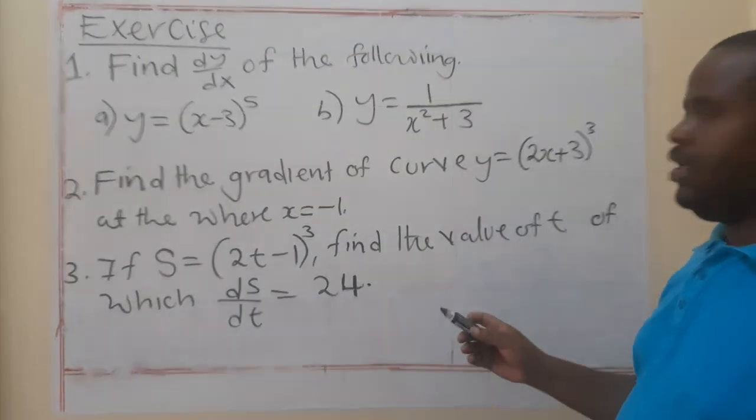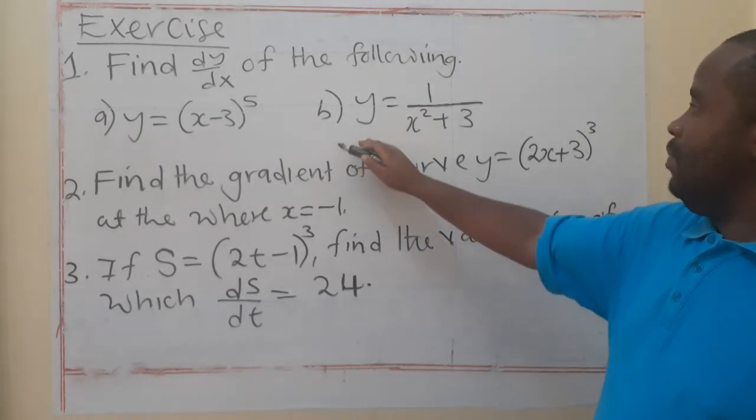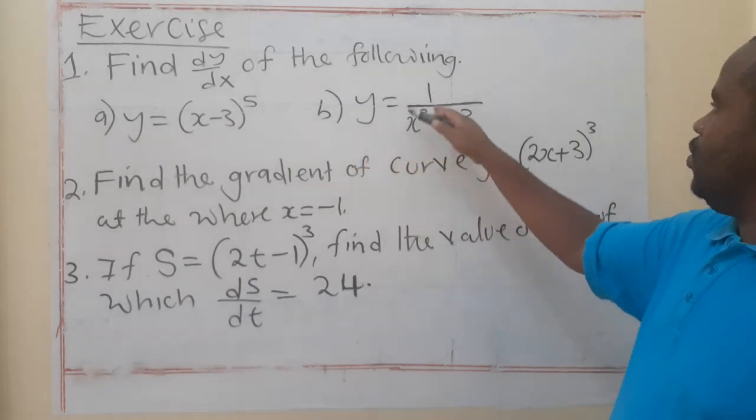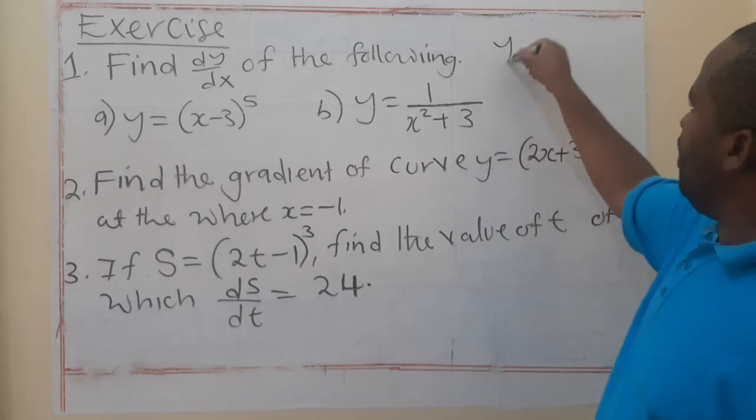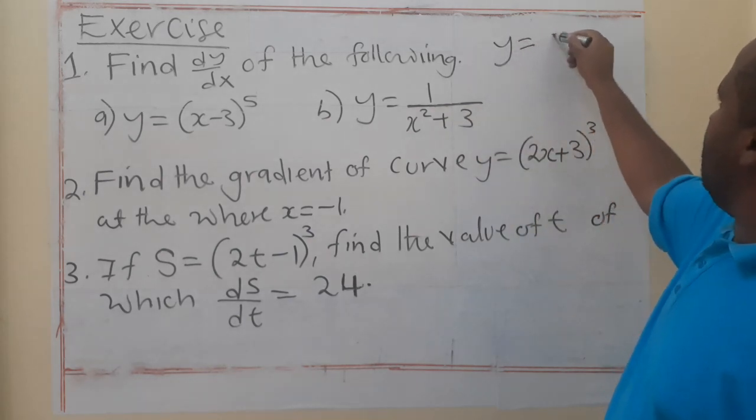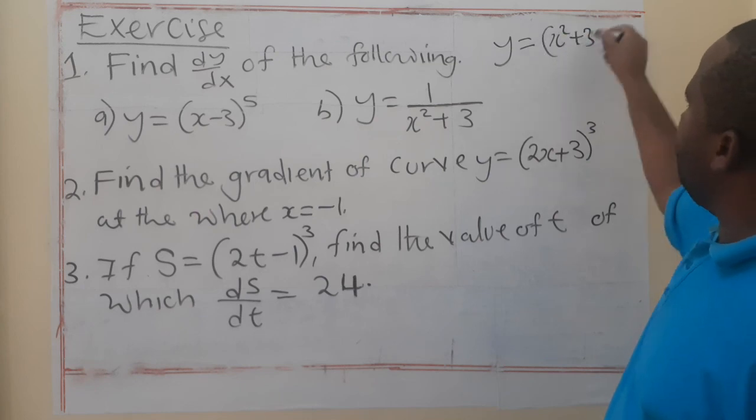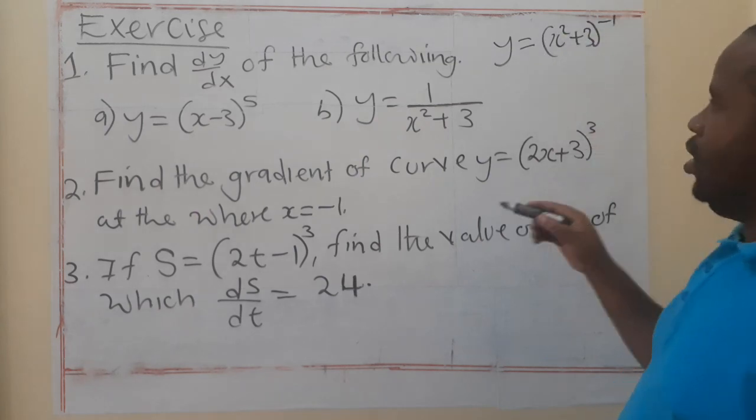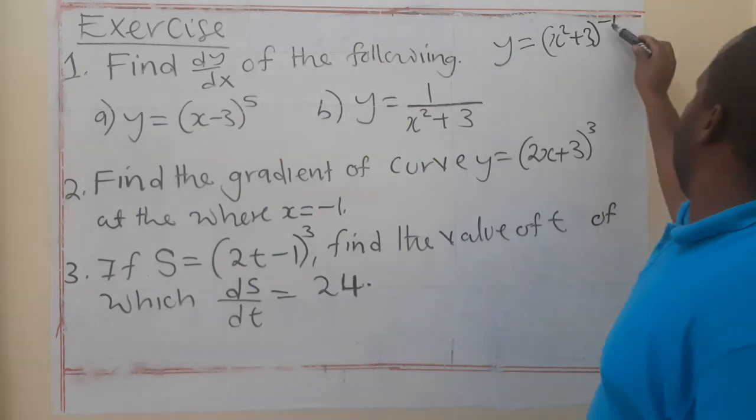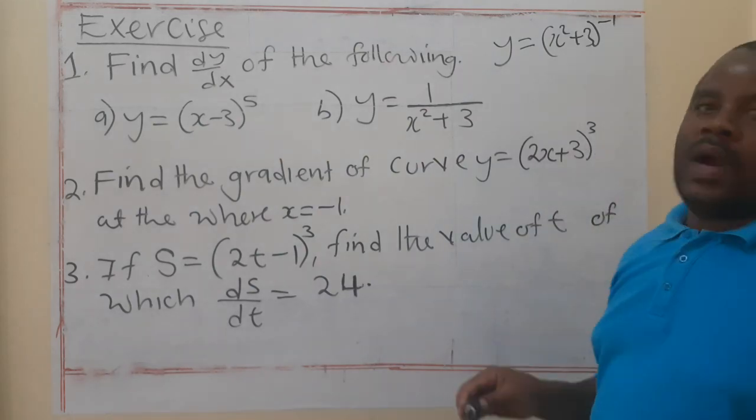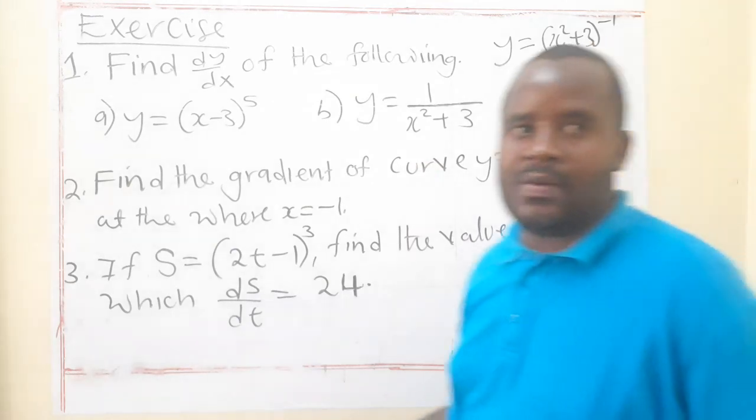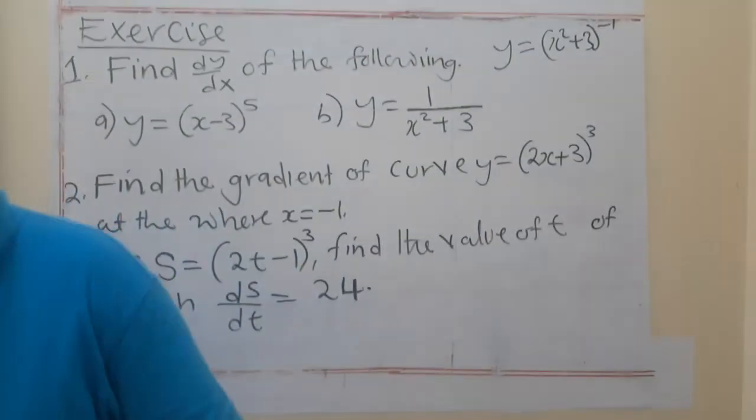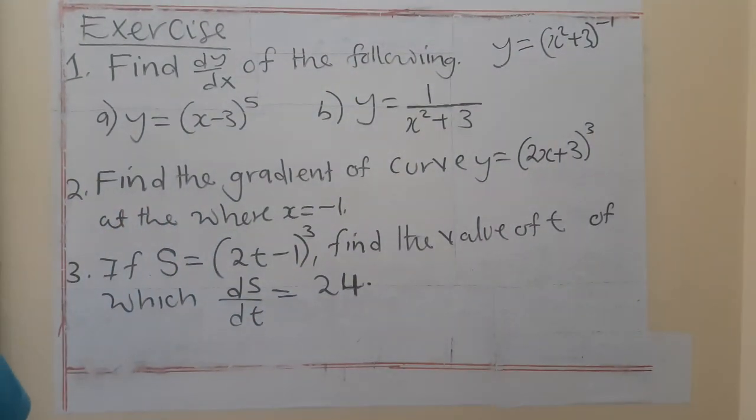And I will be able to give you an exercise. This is your exercise. Where y is equal to 1 over x squared plus 3. You know that you can write this as y is equal to x squared plus 3 to the power of negative 1. So, in this case, your power is negative 1. So, you can try these questions. Thanks so much.